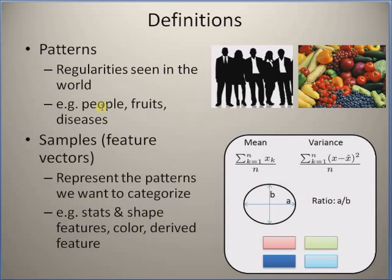The next definition is 'sample.' What are these samples? Samples are basically feature vectors — vectors or numbers, and sometimes words, that represent or characterize the patterns or regularities. Some examples of these features or samples include statistical features, shape features, colors, and also some advanced derived features.